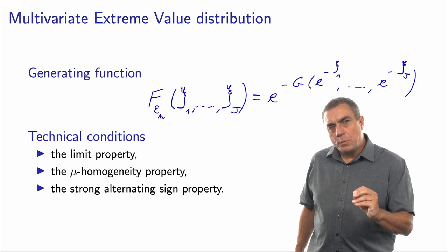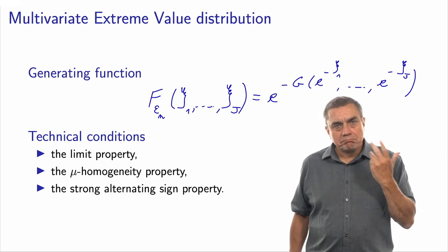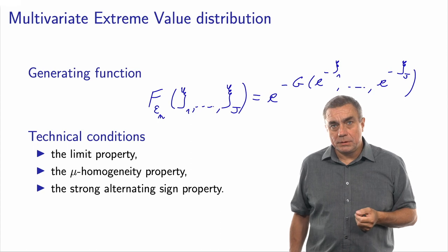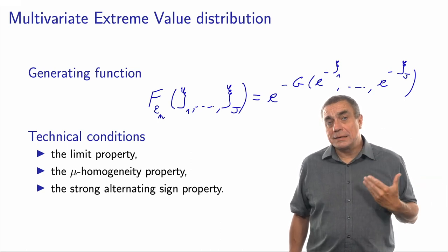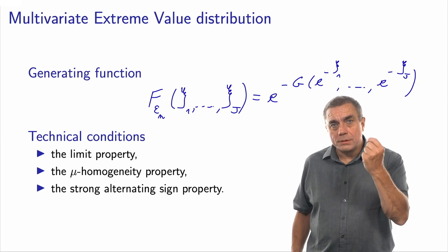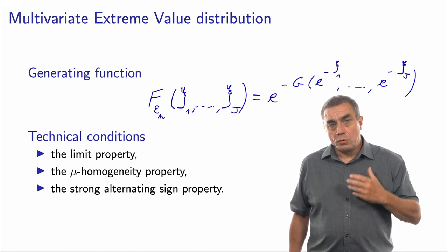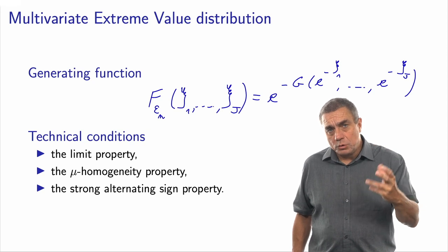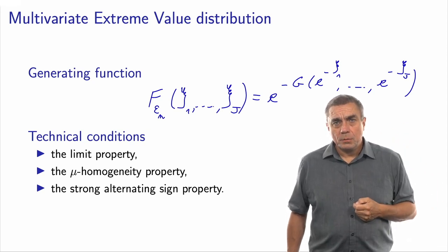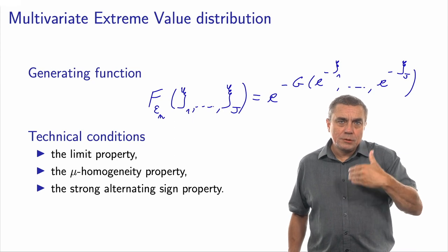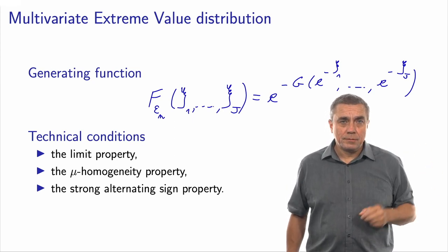The second comment is that you can see this double exponential format of this equation, and this reminds you of the definition of the extreme value distribution for a single random variable. Of course now we have this G function, which we didn't have in the case of a single random variable, but we still have this double exponential formulation, which relates this to extreme value.